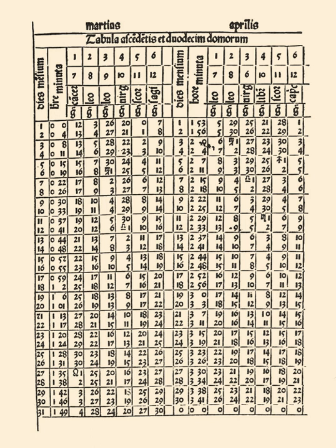1627, the Rudolfine Tables of Johannes Kepler based on elliptical planetary motion became the new standard. 1679, La connaissance des temps aux calendriers et aphemerides du lever et coucher du soleil, de la lune et des autres planetes, first published yearly by Jean Piccard and still extant.